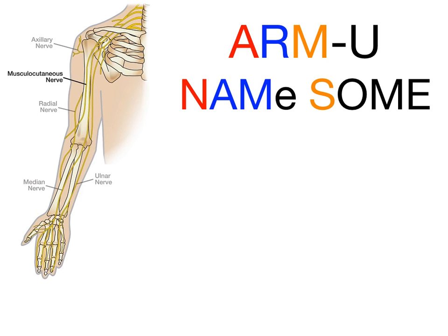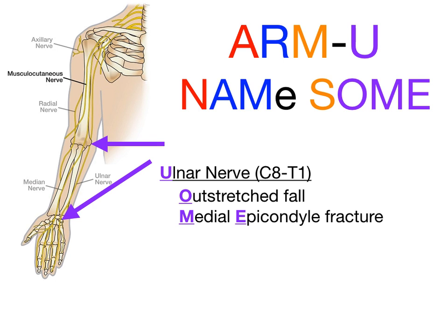The U in 'Arm University' is the ulnar nerve, going with O, M, and E in 'name some.' The ulnar nerve comes from C8 to T1. O stands for outstretched fall — if you fall on an outstretched hand, you can injure the hook of the hamate, a bone in the hand, and the ulnar nerve passes right over it. ME stands for medial epicondylar fracture.